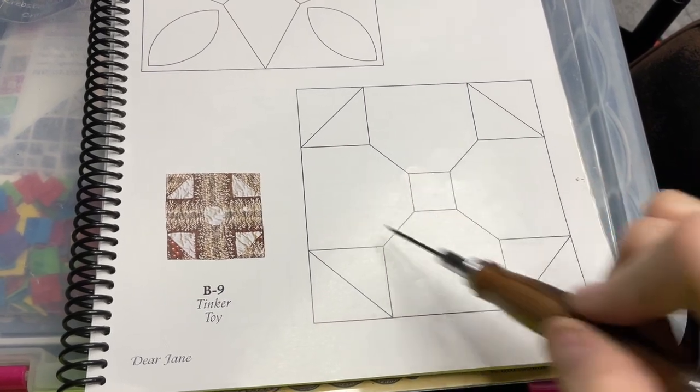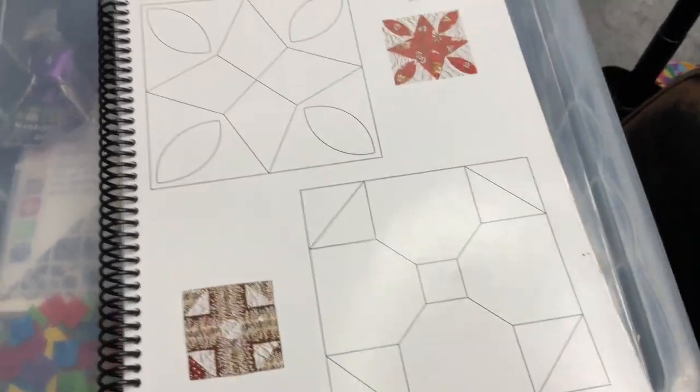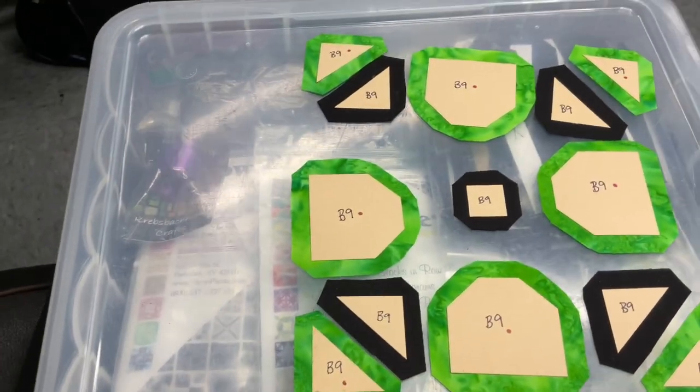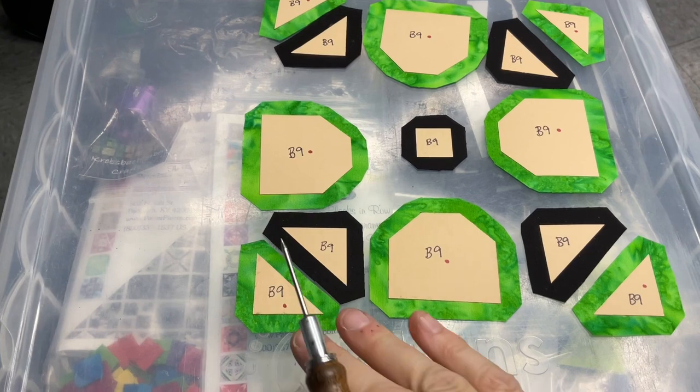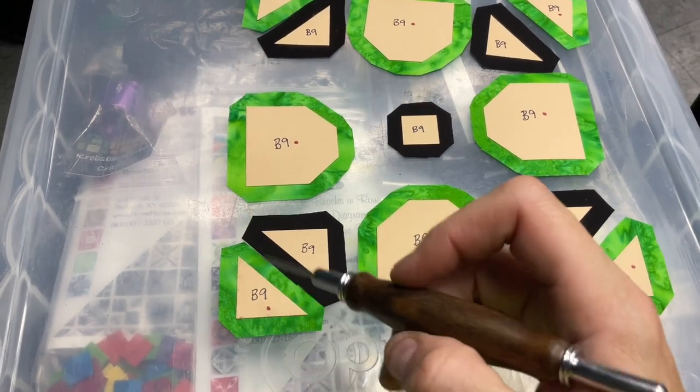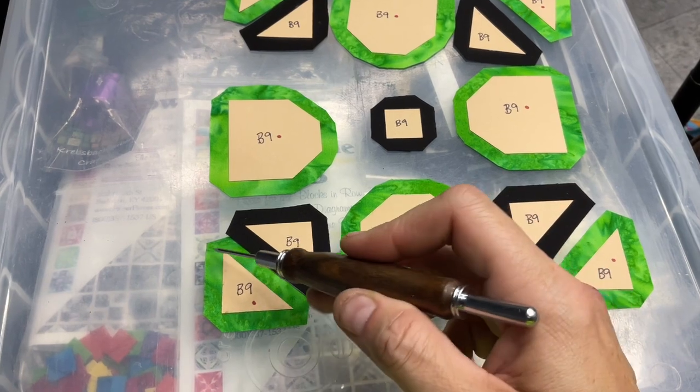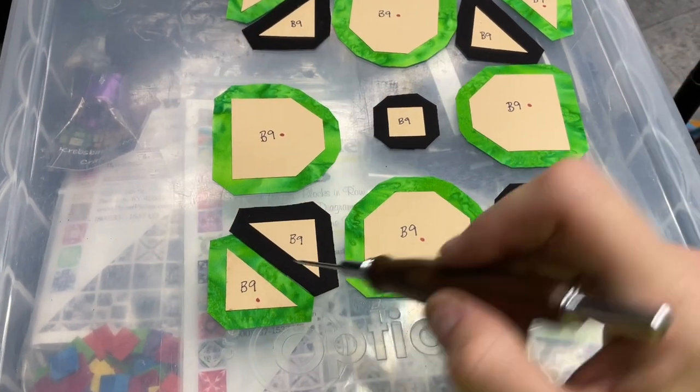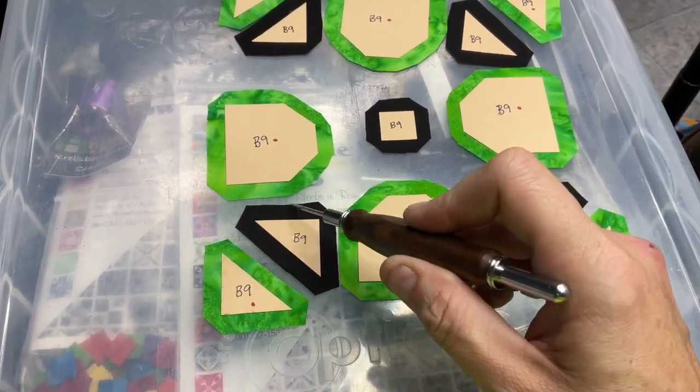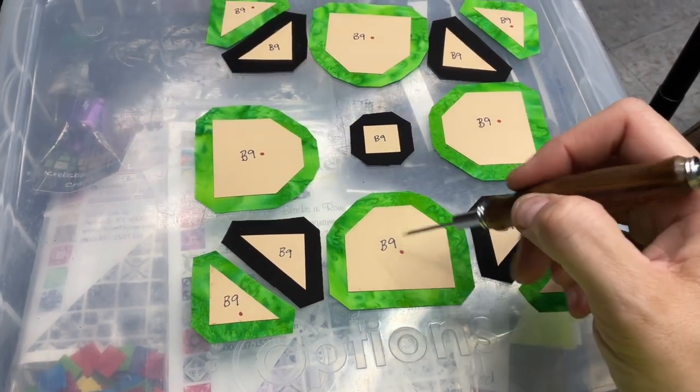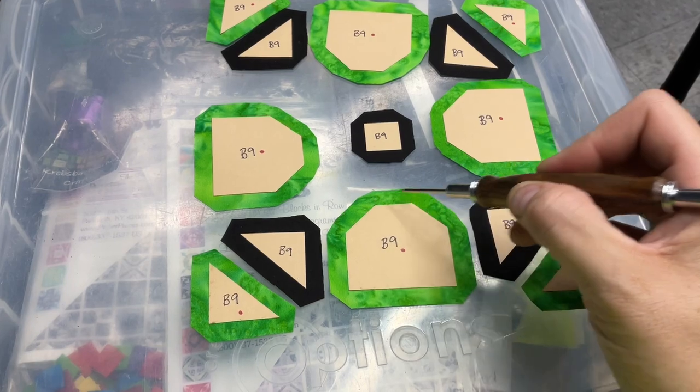These triangles I'm going to baste with the legs first and then the hypotenuse, so the tags will go away from the center on both of them. For these pieces I will pick a direction.